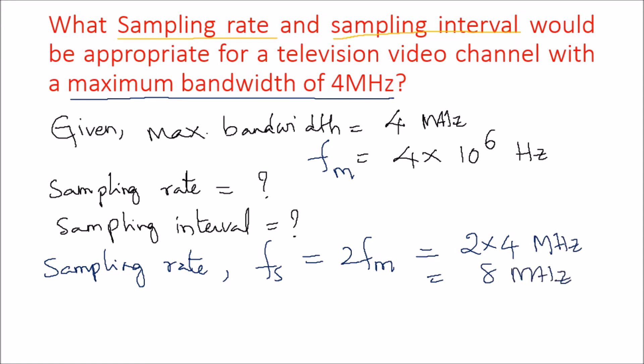How to calculate sampling interval? Sampling interval is represented as Ts, and we know that the time period is represented as 1 by fs. The inverse of frequency will give the time period. So what is fs value? 8 megahertz. So we write 1 by 8 megahertz.